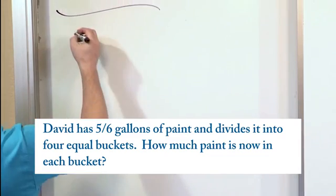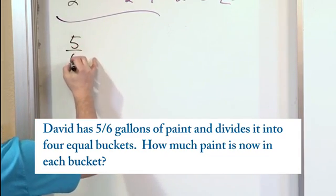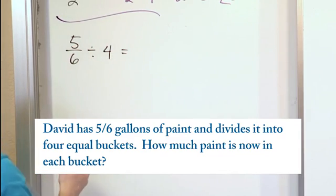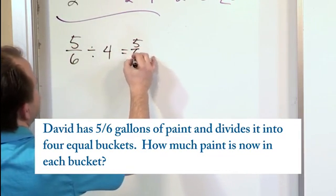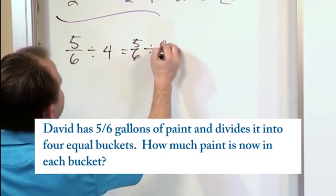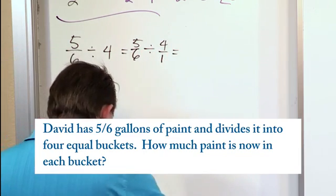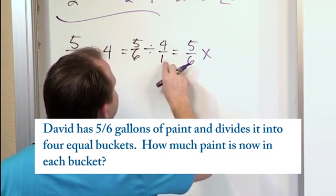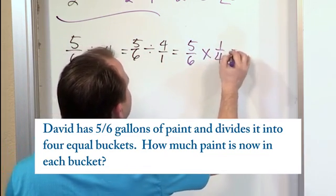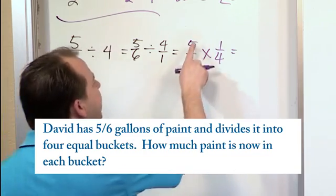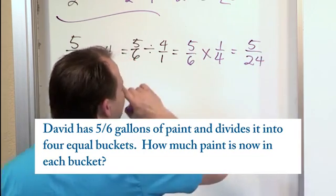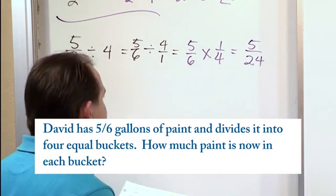So how much goes in each bucket? Well, you start with five sixths gallon and you divide by four because you're putting it into four equal parts. So five sixths, this four becomes four over one. And as we've always been doing before, now we change to multiplication. Five sixths and we multiply, we flip this over to one fourth. And now we can finally multiply. Five times one is five. Six times four is twenty-four.